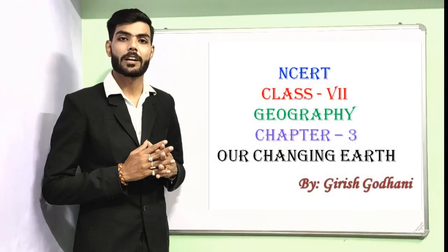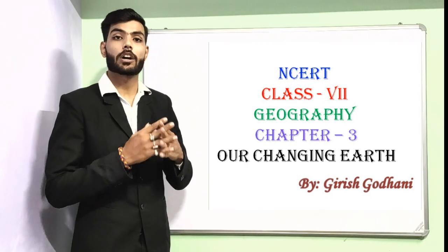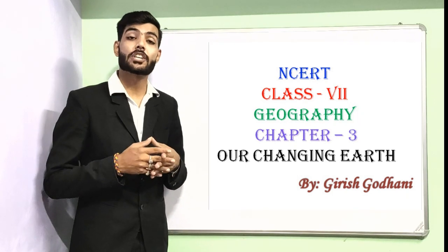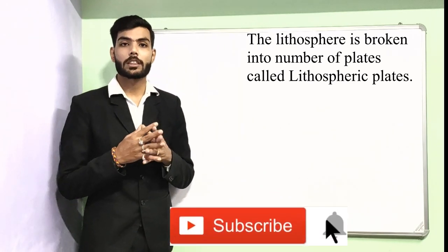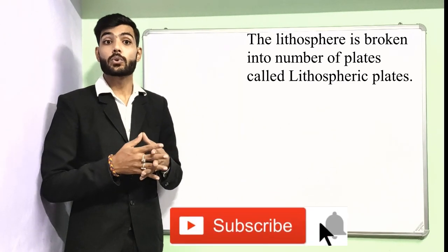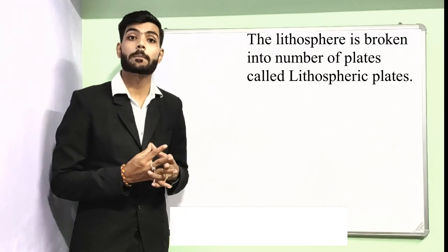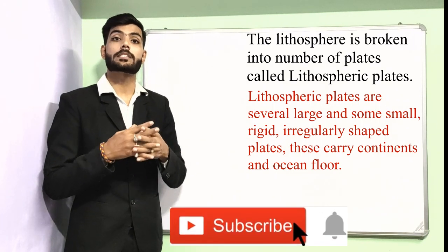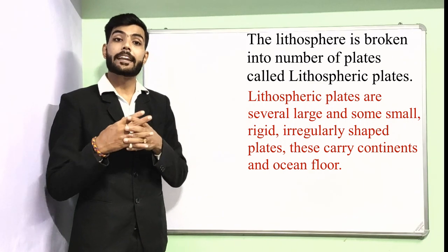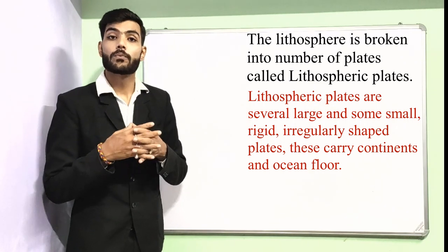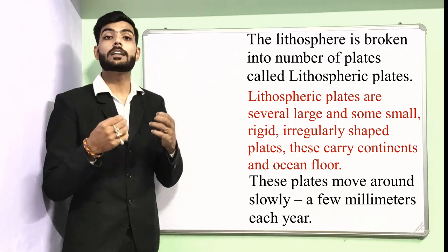Hello everyone, this is Girish Guadhani and today we are going to discuss NCRT Class 7 Geography Chapter 3, that is 'Our Changing Earth.' The lithosphere is broken into a number of plates called lithospheric plates. These are several large and some small, rigid, irregularly shaped plates which carry the continents and the ocean floor, and these plates keep moving slowly, almost a few millimetres each year.